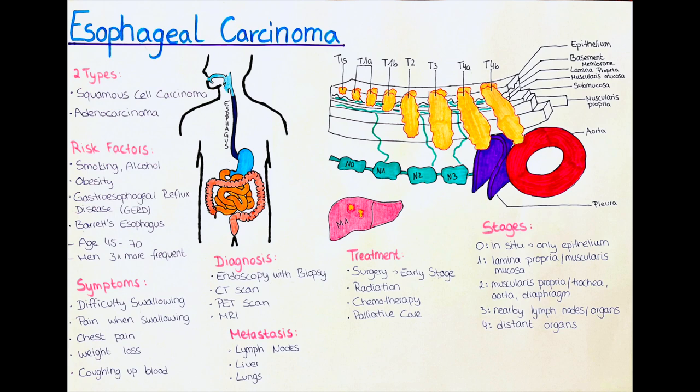The esophagus is a muscular tube that connects the throat to the stomach and is responsible for the transport of food and liquids from the mouth to the stomach. Esophageal carcinoma is a serious and life-threatening disease that requires prompt medical attention.